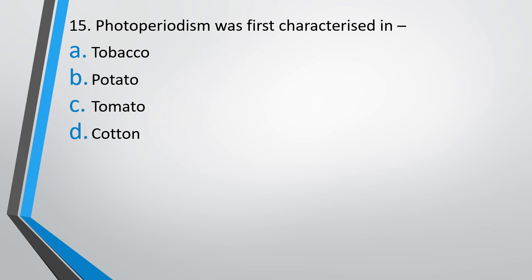Question 15: Photoperiodism was first characterized in — tobacco, potato, tomato, or cotton. The correct answer is Option A, it was first characterized in tobacco.